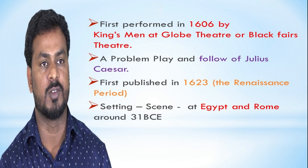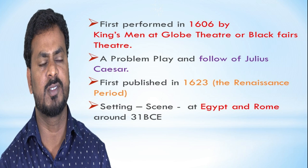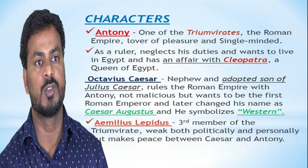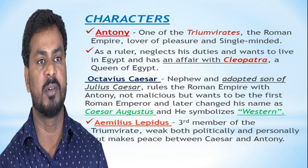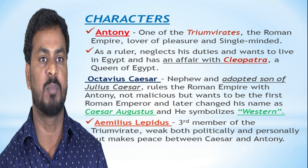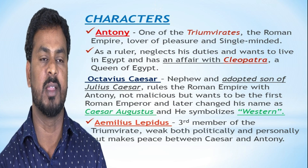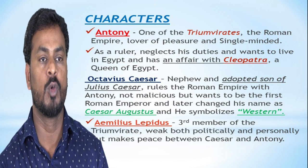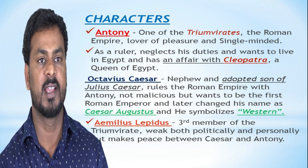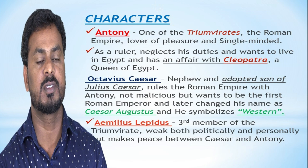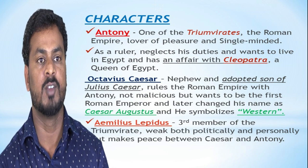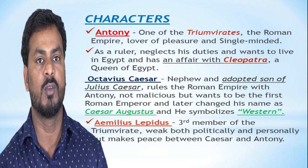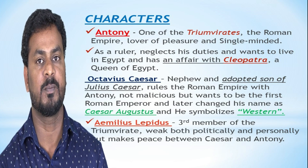Now let us see the characters. First, Antony. He is one of the Triumvirate, the Roman rulers, and is a lover of pleasure and single-minded. As a ruler, he neglects his duties and wants to live in Egypt and has an affair with Cleopatra, who is the queen of Egypt.